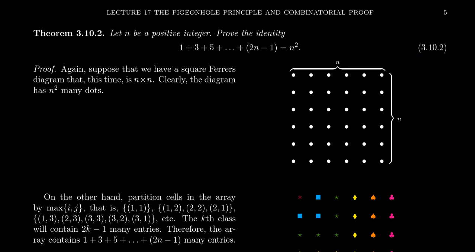Let's provide another example - a slightly harder, far less intuitive formula. Let n be a positive integer. Then 1 + 3 + 5 + 7 + 9 + ... + (2n-1), the sum of consecutive odd integers, equals n². That is, adding consecutive odd integers always gives you a perfect square, and you get the next perfect square by adding the next odd integer. It's a fantastic result - not very intuitive at all, but it is the case.